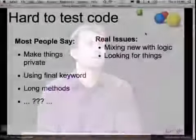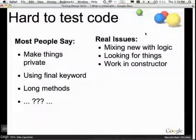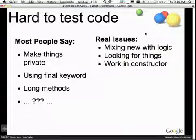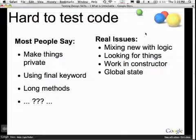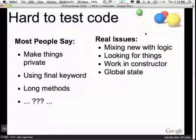Looking for things — we do this in our code all the time. Doing work in the constructor makes it really hard to instantiate things inside your test. Having global state is essentially where all the uncertainty comes from. Singletons are just another name for global state. And static methods are essentially procedural programming.